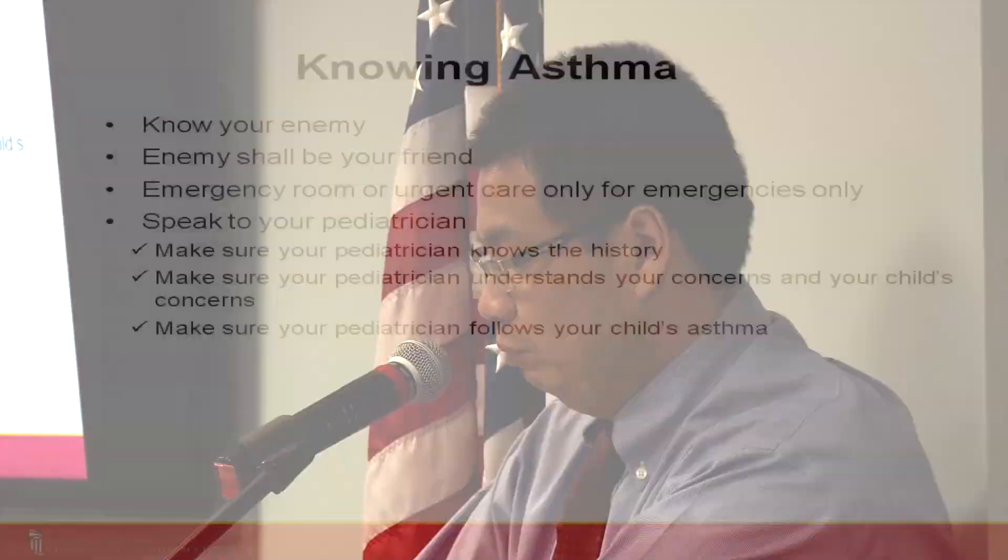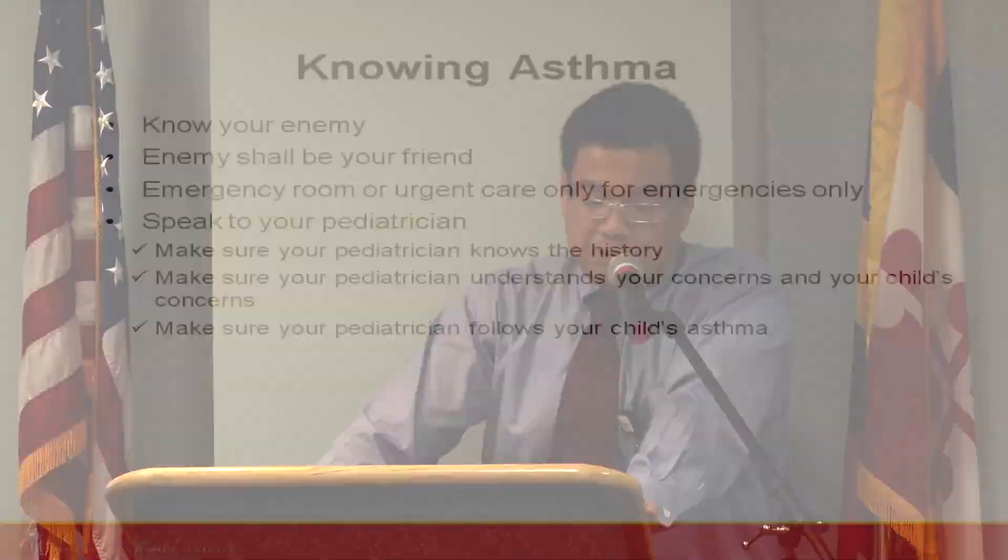You need to know your enemy — in order to beat your enemy, you need to know them. So you need to understand what asthma is. Asthma is not an infection. It's not something they caught at Walmart. It doesn't matter which side of the family it comes from — your kid has it, now how do we deal with it? Asthma is not a disease; it's a condition. They can outgrow it, but you live with asthma until proven otherwise. Make asthma your friend — learn how to manage it so it doesn't flare. Use the emergency room or urgent care only for emergencies.